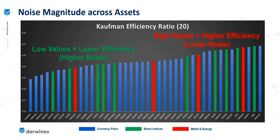If you saw that previous episode, there'll be one obvious difference here. The stock indices in green and the soft commodities in red appear to be much more evenly interspersed across this range of assets. Whereas using the price density calculation, they were all over the right-hand side of the chart, meaning that they had lower levels of noise. So clearly the choice of price density or the efficiency ratio is going to give us very different results when we start to use this in our trading strategies. But as of yet, of course, we don't know which one is most effective.